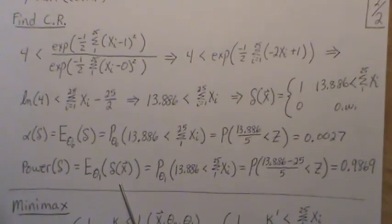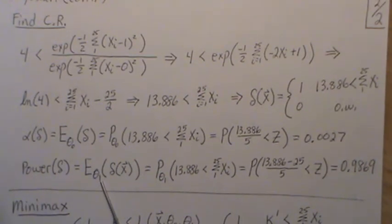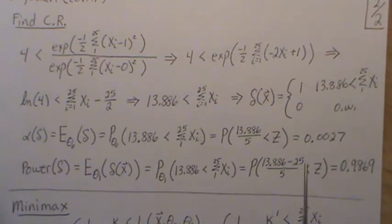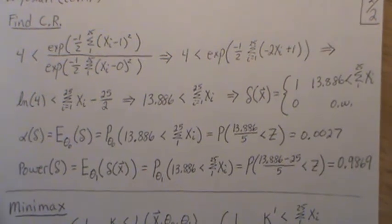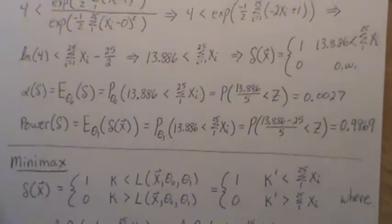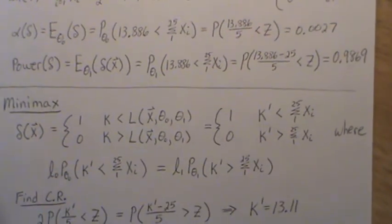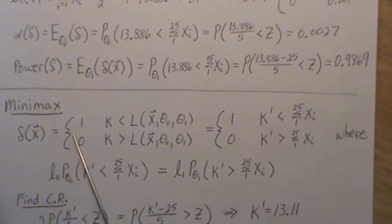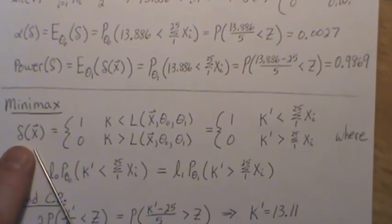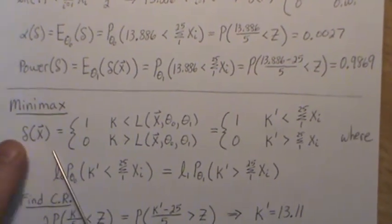To calculate the power of the Bayesian test: it's the expected value of the decision function when the alternative is true. Subtracting the mean from both sides and dividing by the standard deviation gives a standard normal z random variable, and this probability is 0.9869.